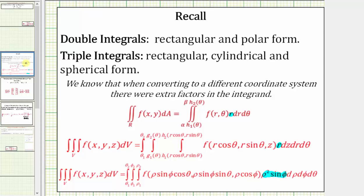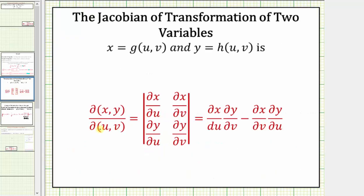To determine the Jacobian, we evaluate a two by two determinant whose elements are the partial derivatives of x and y with respect to u and v. To evaluate this two by two determinant, we use this formula, which is just this product minus this product.